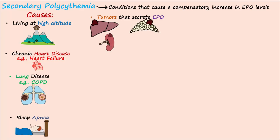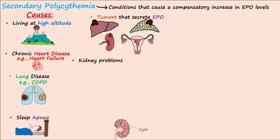The most common EPO-secreting tumors include hepatocellular carcinoma, renal cell carcinoma, adrenal adenomas, and uterine neoplasms.